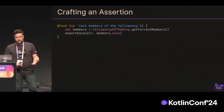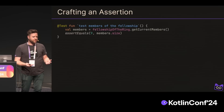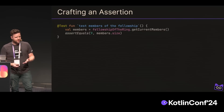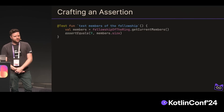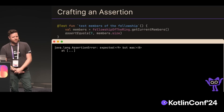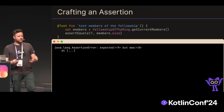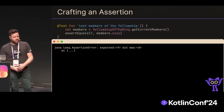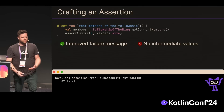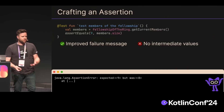So we could check some documentation and find assert equals. We say the expected value is 9 and the actual value is members.size. We run that and we know that there were only eight members of the Fellowship, but we don't know who's missing. So the error message is better, but we don't get any intermediate values.